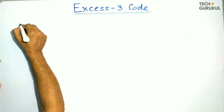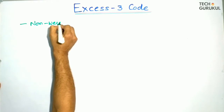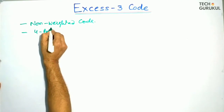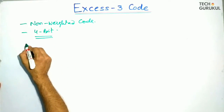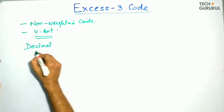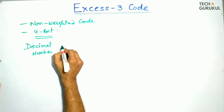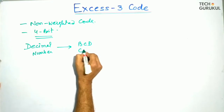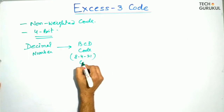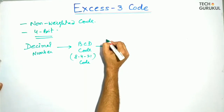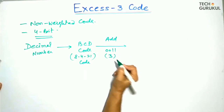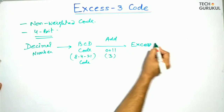XS3 code is a non-weighted code. It is a 4-bit code. In the XS3 code, some decimal number is given. First of all, we convert this into the BCD code — that is also the 8421 code. Then in this BCD code, we add 3 to make it the XS3 code.